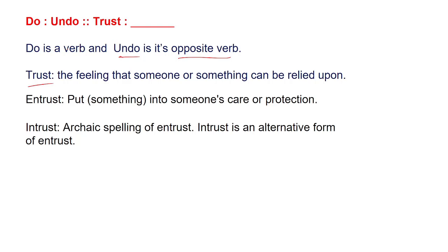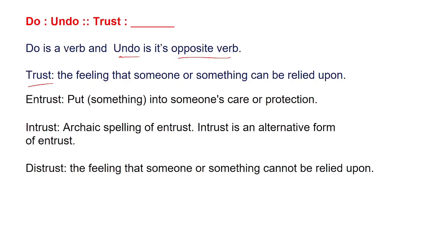Let's see choice number three, which is 'distrust.' Distrust means the feeling that someone or something cannot be relied upon. So this has exactly the opposite meaning of trust, making it the right choice. There is no need to check the next option, but we will still verify it.